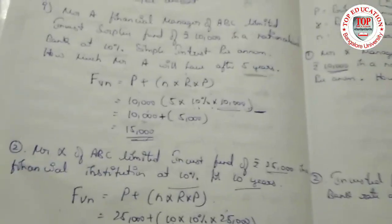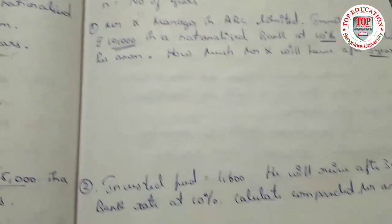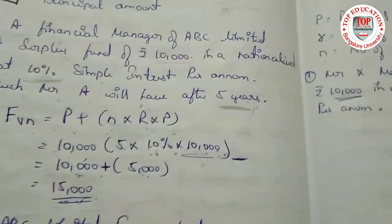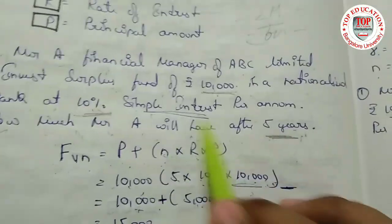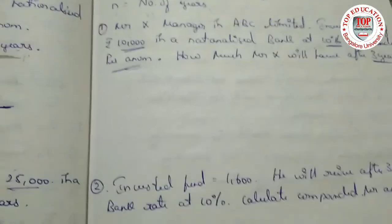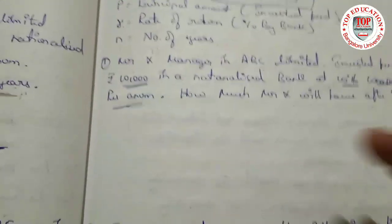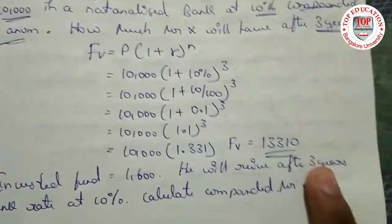If you have not seen the last video, please go and see it first and come back so we move in order. Here 'compounded per annum' means use the compound interest method only. Let's substitute the values and find the answer.